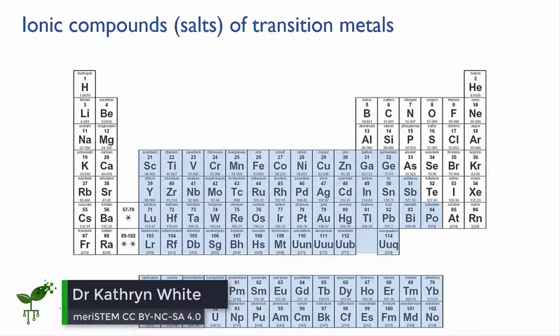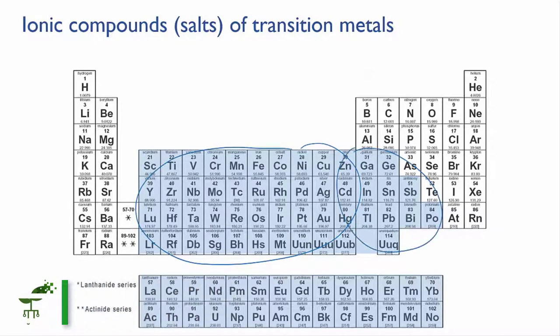Now that you know how to name and write the formulae for ionic compounds, we'll look at a subset of these: the salts of the transition metals, and the post-transition metals, and the lanthanides and actinides.